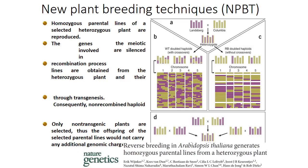New plant breeding techniques: homozygous parental lines of selected homozygous plants are reproduced and the recombination process is managed. Only non-transgenic plants are selected, so the selected parental lines would not carry additional genomic changes. This is a technique combining cytological techniques with modern molecular techniques to quickly obtain double haploid lines.